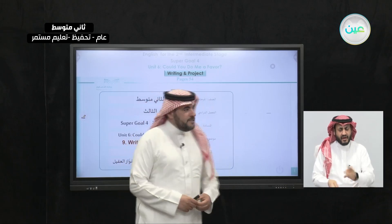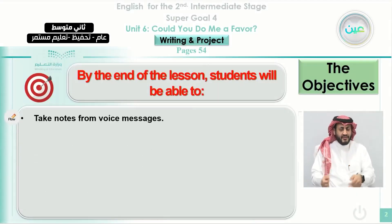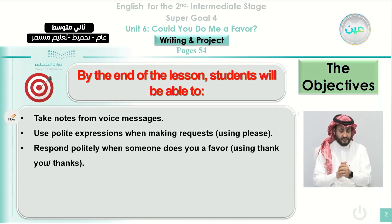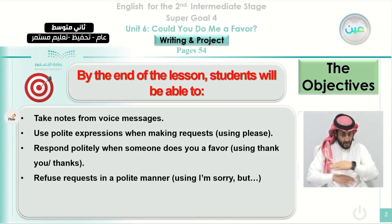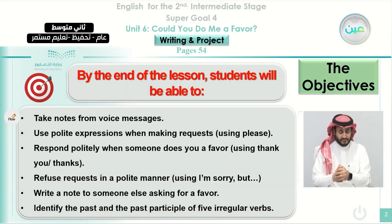As always, we start our class by reviewing the objectives — what we are planning to achieve at the end of the class. First, students will be able to take notes from voice messages. Students will be able to use polite expressions when making requests using 'please'. Students will be able to respond politely when someone does them a favor using 'thank you' and 'thanks'. Students will be able to refuse requests in a polite manner using 'I'm sorry' or using the expression 'but'. Also, students will be able to write a note to someone else asking for a favor, and to identify the past and past participle of five irregular verbs.